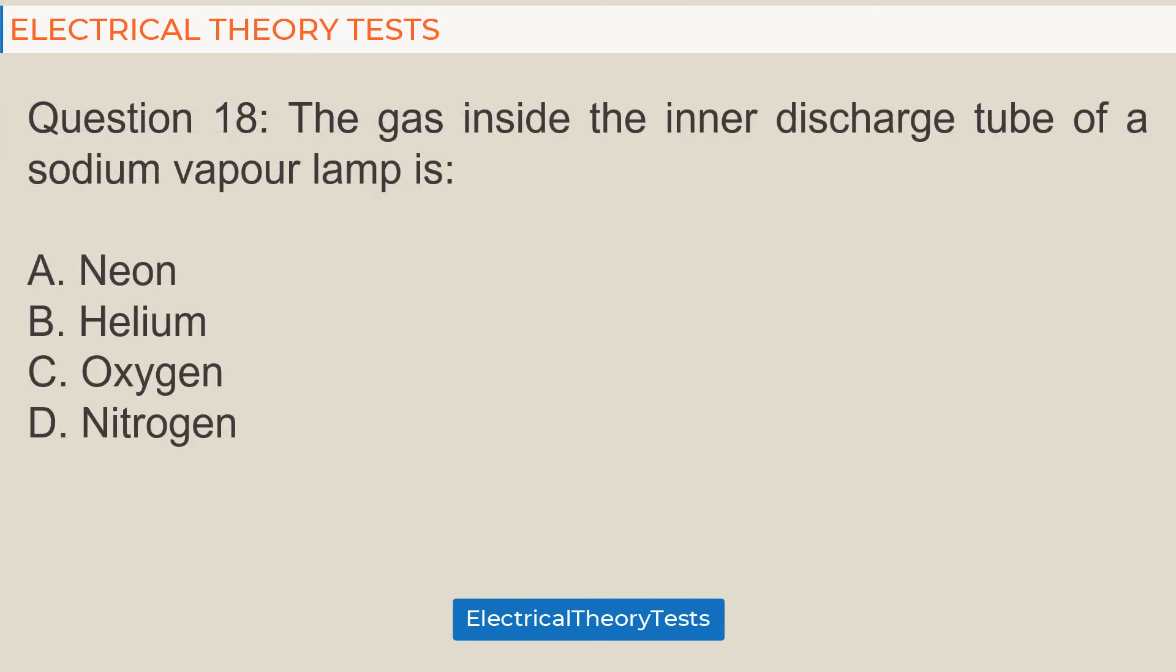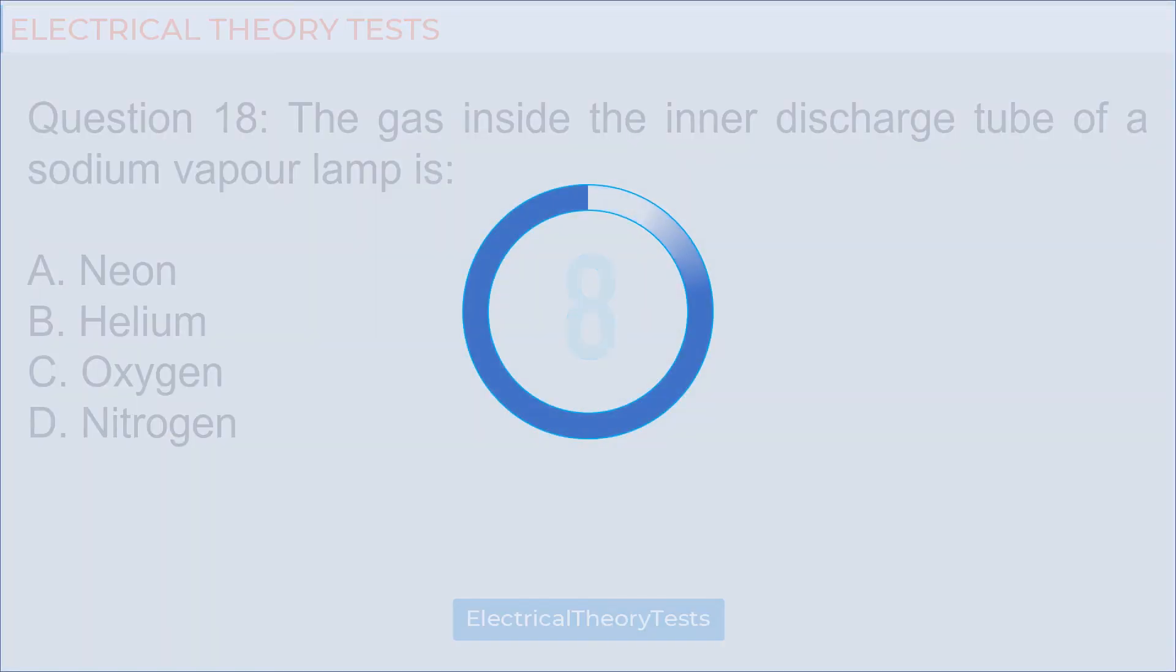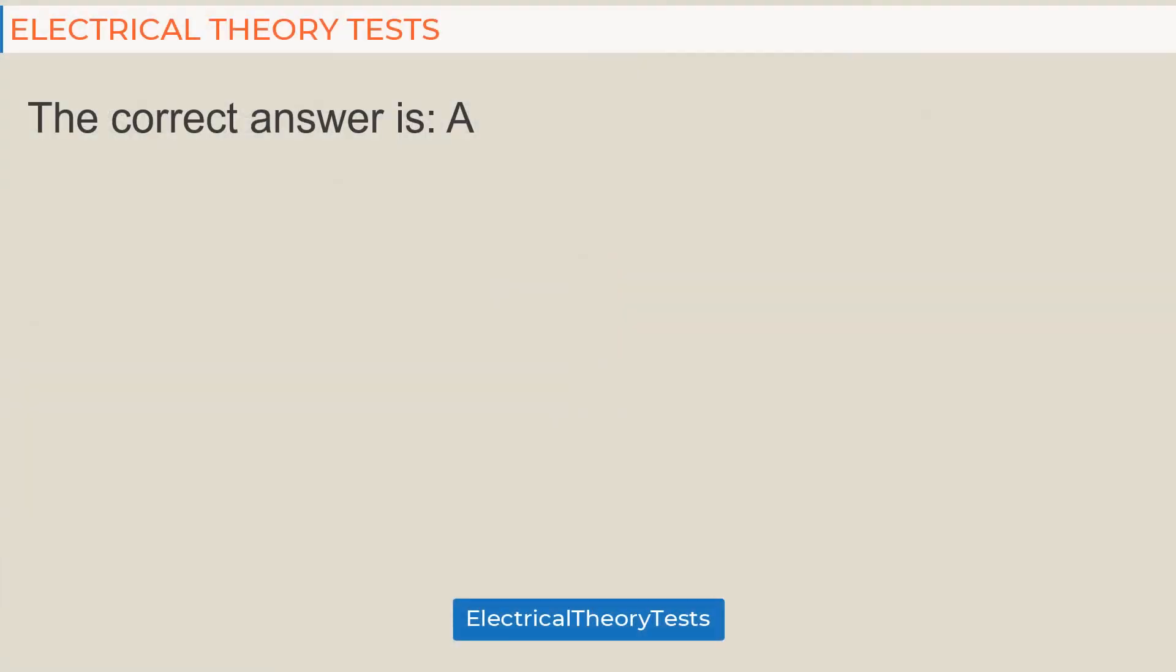Question 18: The gas inside the inner discharge tube of a sodium vapor lamp is: A: Neon, B: Helium, C: Oxygen, D: Nitrogen. The correct answer is A.